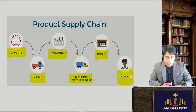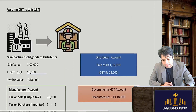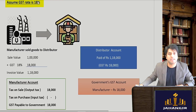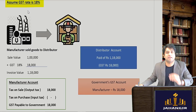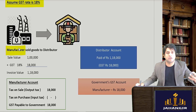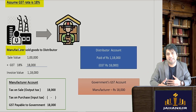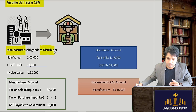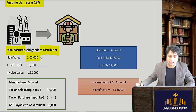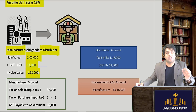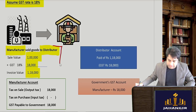Let's understand with simple examples how the GST system works. In this example, the GST rate is fixed at 18% throughout. The manufacturer — who could be a producer, a farmer, or someone working in the primary sector — creates goods and sells them to the distributor. He charges 1 lakh rupees for the goods. At 18% GST, that's 18,000 as GST, making the invoice value 1 lakh 18,000. The first leg of the transaction is over.